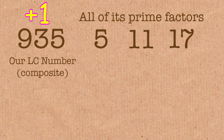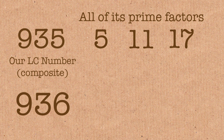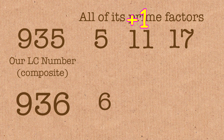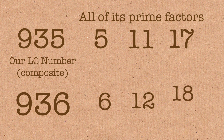935 has prime factors which are 5 times 11 times 17. And if I add 1, I get 936. The factors of 936 include 5 plus 1 (which is 6), 11 plus 1 (which is 12), and 17 plus 1 (which is 18).